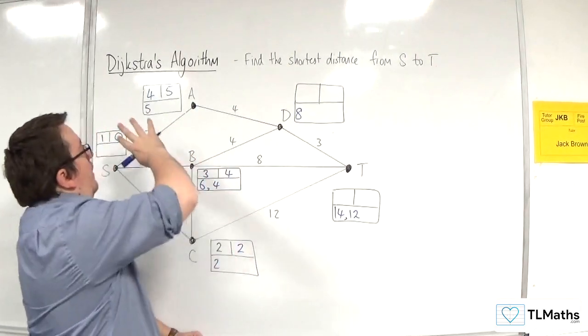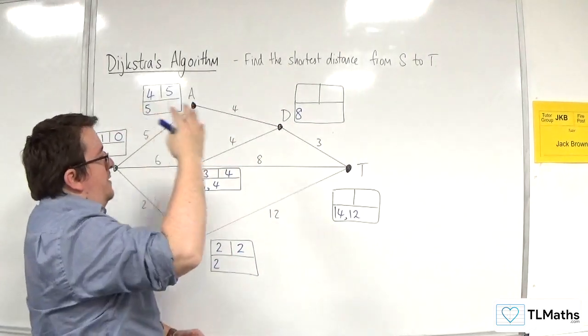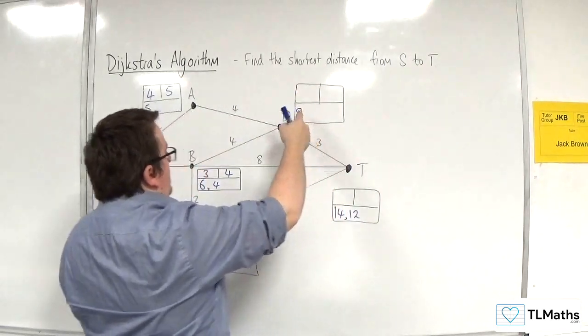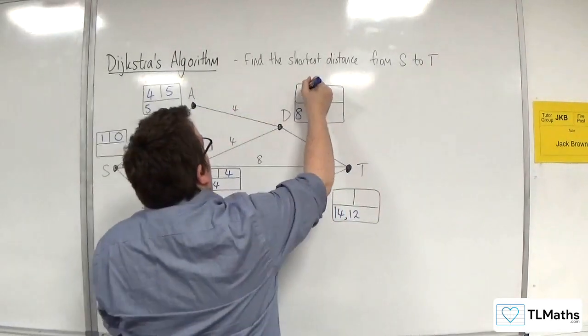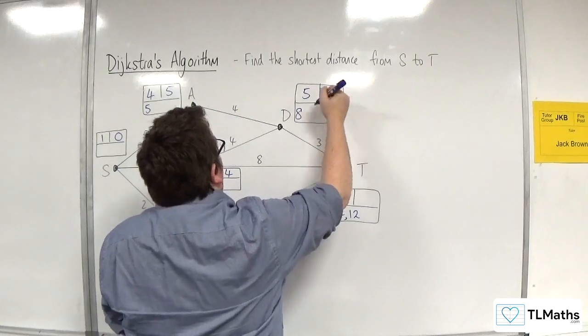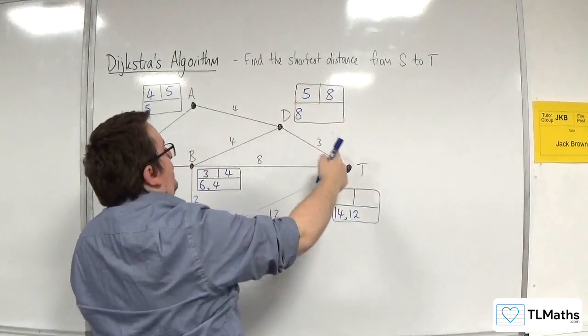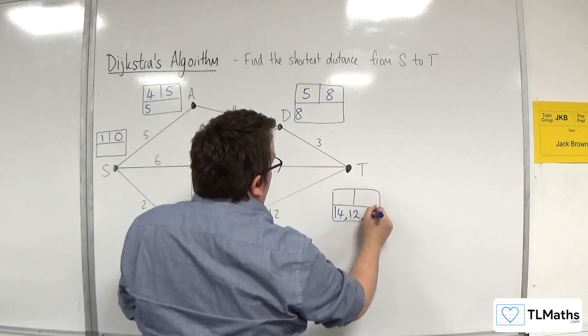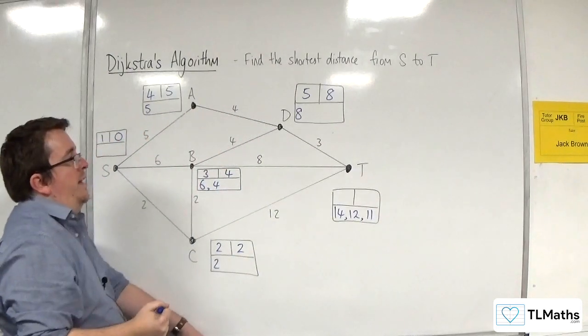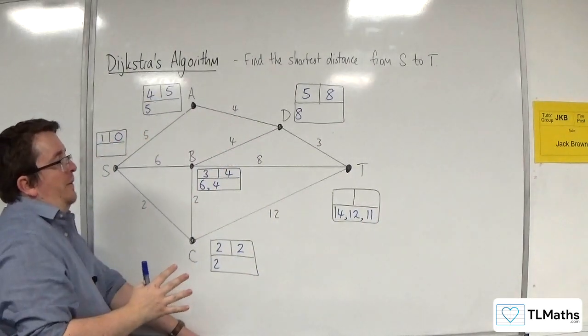So I've exhausted all the routes out of A. So the next smallest would be D. So this gets picked next with five there and the final value would be eight. Eight plus three would be 11, which is better than 12, so that gets written in there. And that's exhausted all routes out of D.